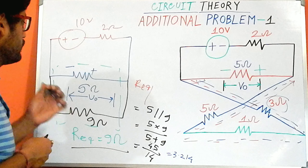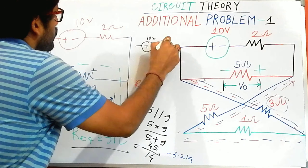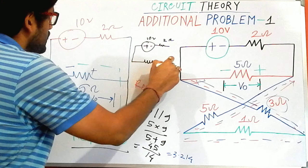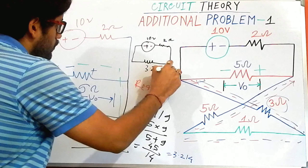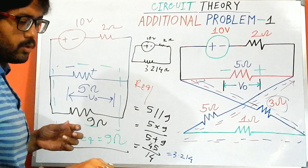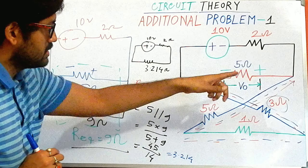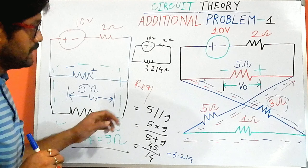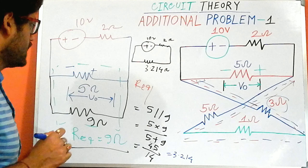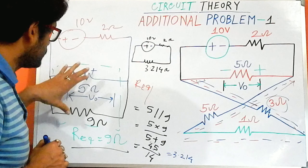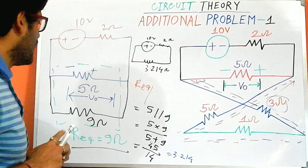Instead of writing the two separate resistances, I can draw the equivalent circuit, which looks like this: 10 volt source, 2 ohm resistor, and on the downside the equivalent resistance of 3.214 ohm. To repeat: the cross path gave 9 ohm, which placed in parallel with the 5 ohm gives an equivalent resistance of 3.214 ohm. Our ultimate objective is to find V0.